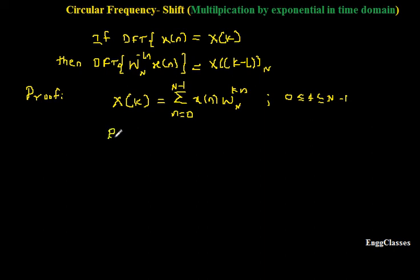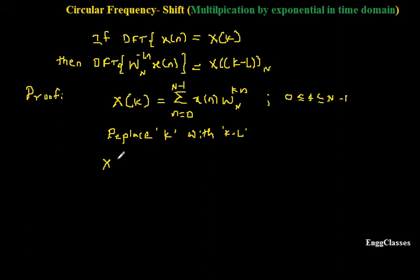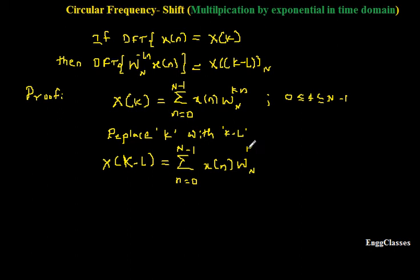In this expression, I will replace every k with k minus L. The reason is: looking at the definition of circular frequency shift, I want X[k minus L] but I only have X[k]. So simply, I replace every k with k minus L to get X[k minus L]. Doing that gives X[k minus L] equal to summation from n equal to 0 to N minus 1 of x[n] times W_N to the power (k minus L) times n.